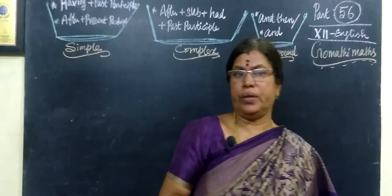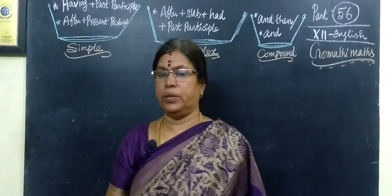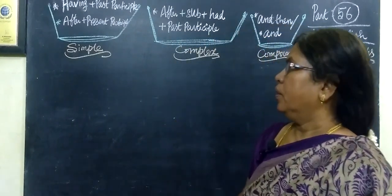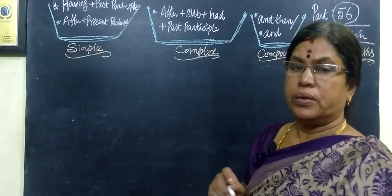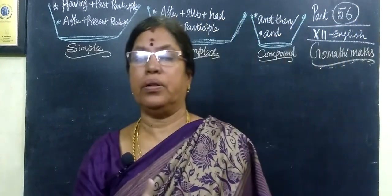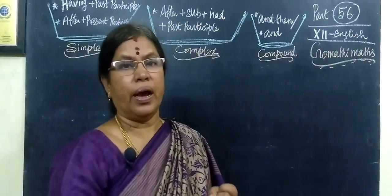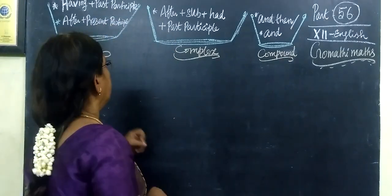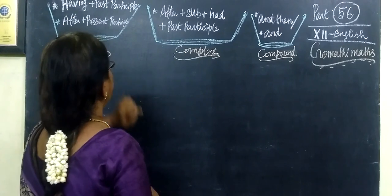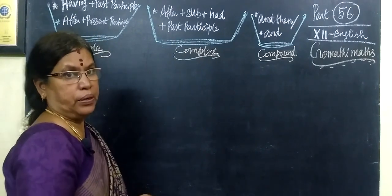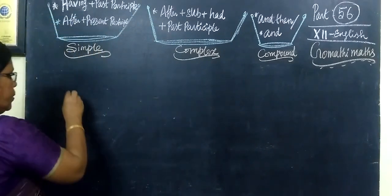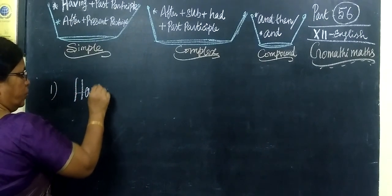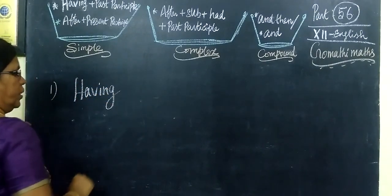Today we see 12th grammar: simple, compound, and complex sentences. In simple type, the structure is having plus past participle. After that, we look at after plus present past participle — having plus past participle. When starting, you must write 'having.'